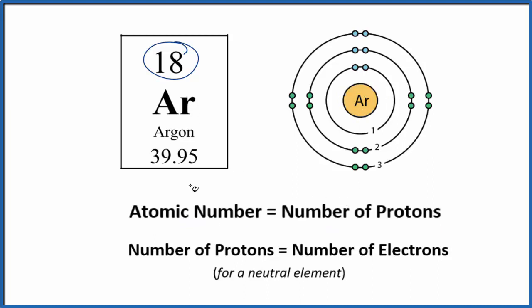Because argon is neutral, in fact all of the elements listed on the periodic table are listed as neutral, the number of protons equals the number of electrons. So we have our 18 protons in the nucleus, but then we have 18 electrons around the argon nucleus, and they're arranged in these energy levels.